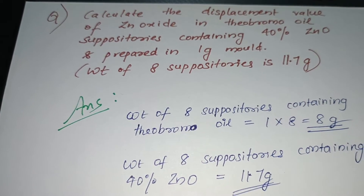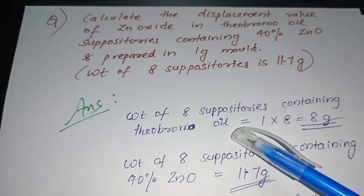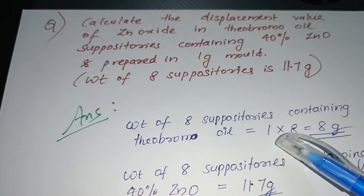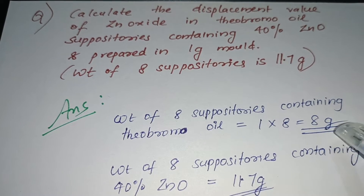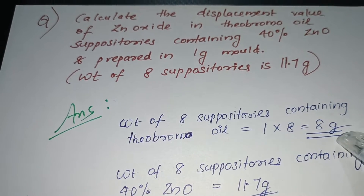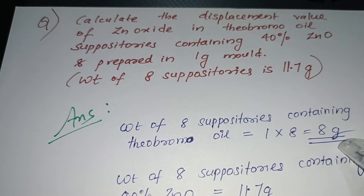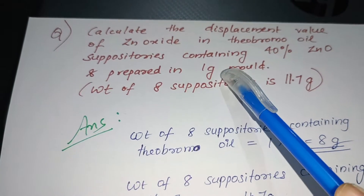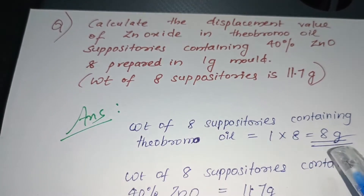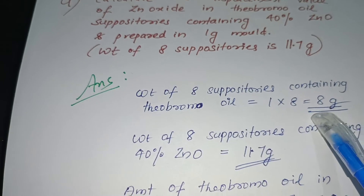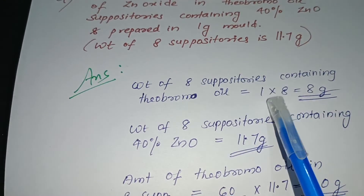The weight of 8 suppositories containing only theobroma oil is equal to 1 gram multiplied by 8, which equals 8 gram. This is the theoretical weight, which contains only the base for 8 suppositories in a 1 gram mold — so 8 gram is the theoretical weight.